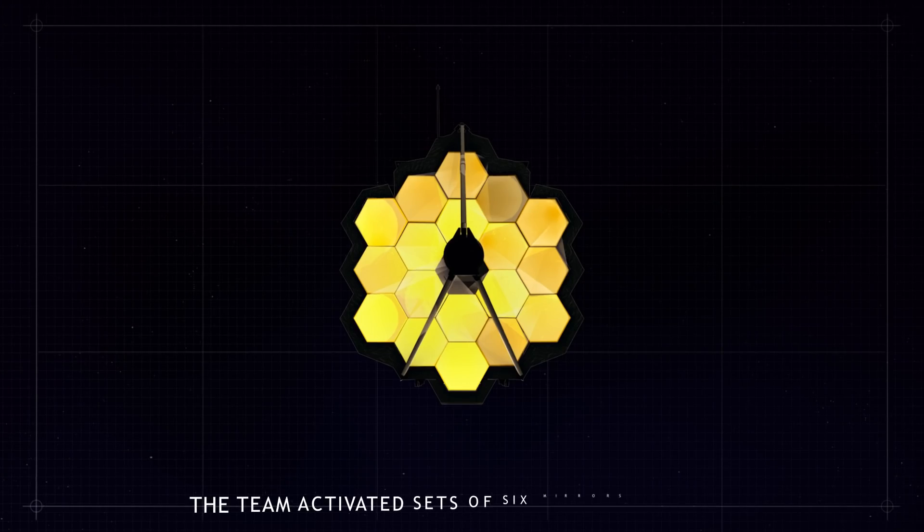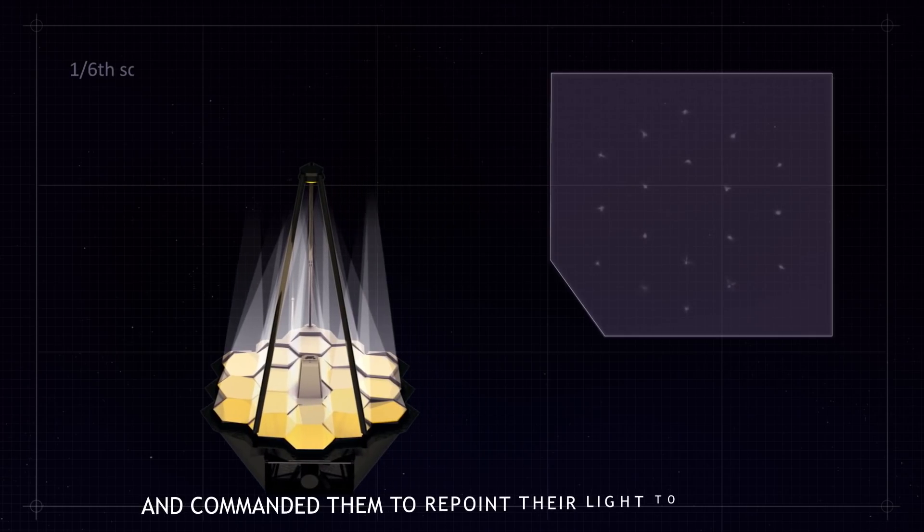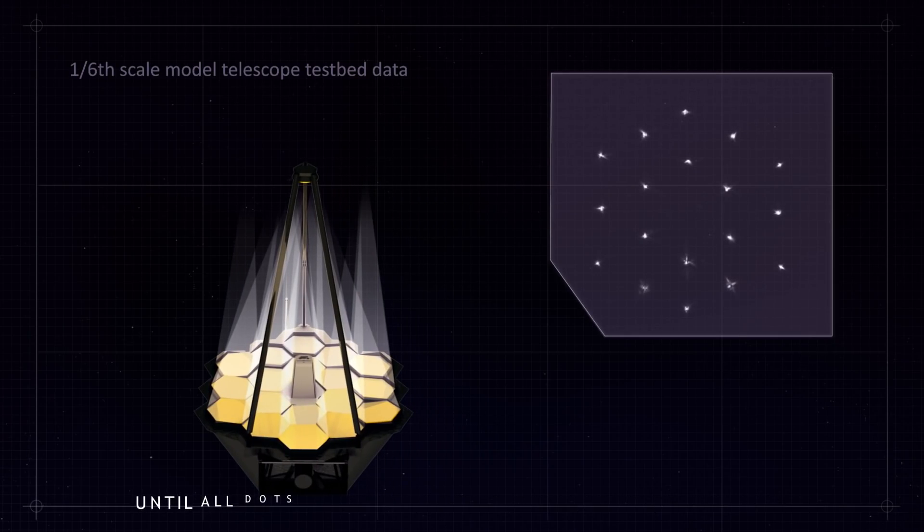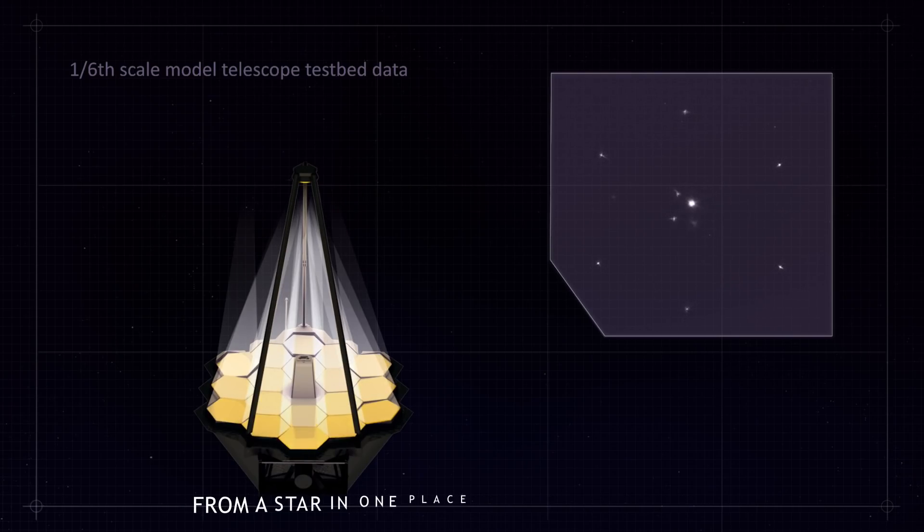the team activated sets of six mirrors at a time and commanded them to repoint their light to overlap until all dots of starlight overlapped with each other. Although image stacking put all the light from a star in one place on NIRCam's detector,